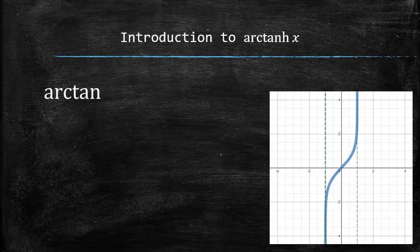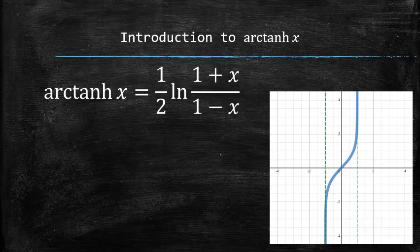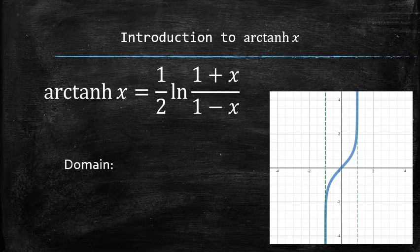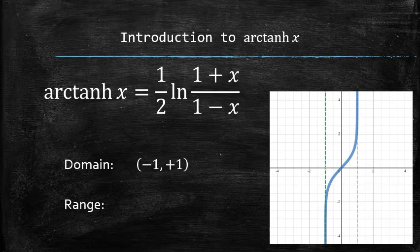So we found the equation for the hyperbolic arctangent function. The domain of this function is the values between negative 1 and 1, and the range of this function is all real numbers.